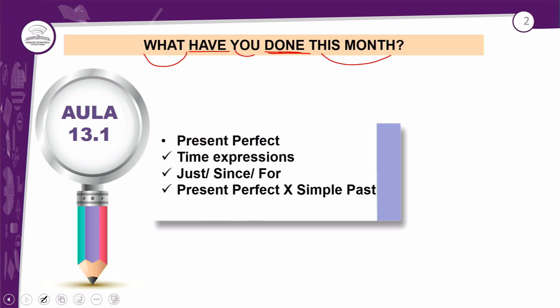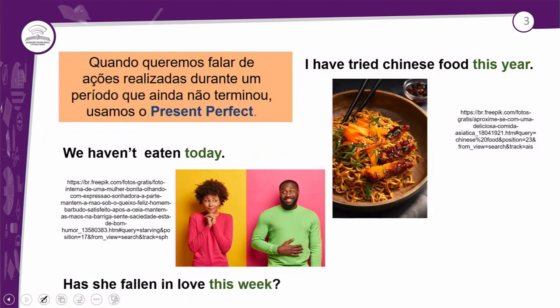Isso tem muito a ver com a aula de hoje. Quando eu falo 'What have you done this month?' — o que você tem feito neste mês? — a gente vai ver sobre as time expressions, as palavras 'just', 'since', 'for', que são muito utilizadas neste tempo verbal. E a diferença entre o present perfect e o simple past, porque acontece muito essa confusão entre estes dois tempos verbais.